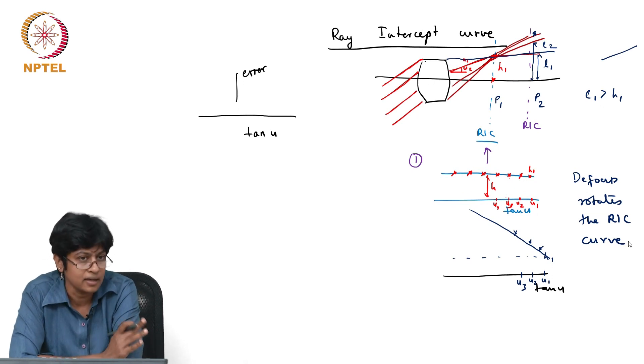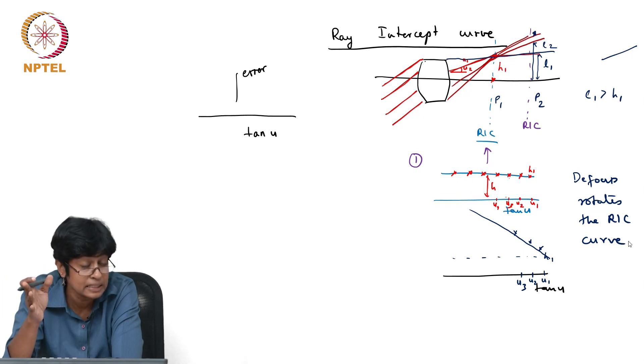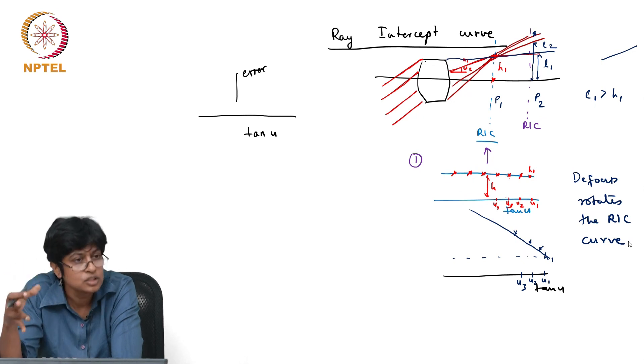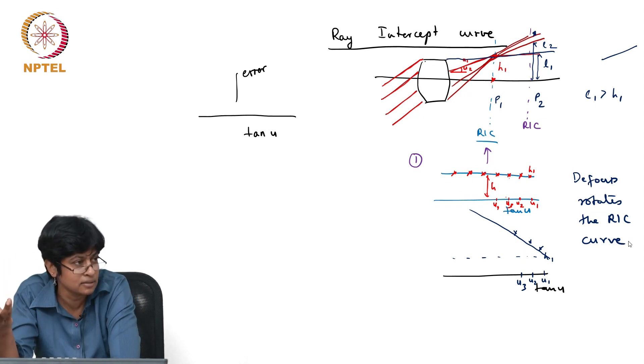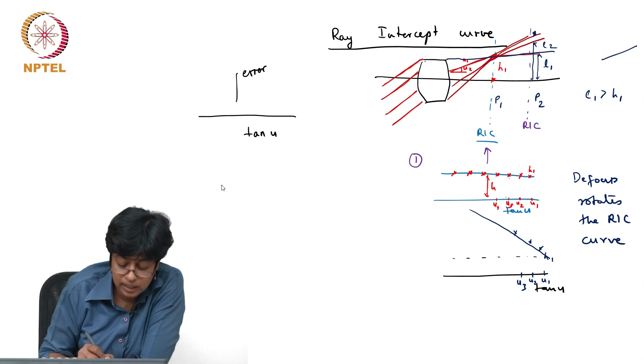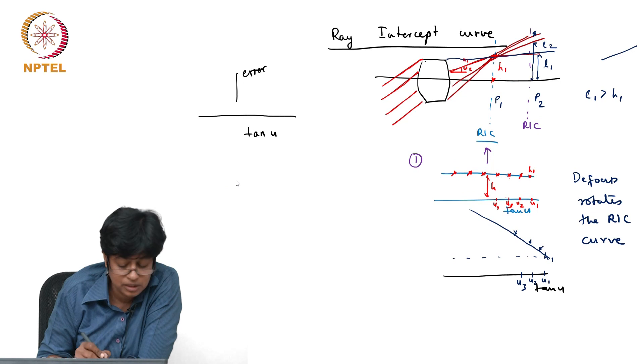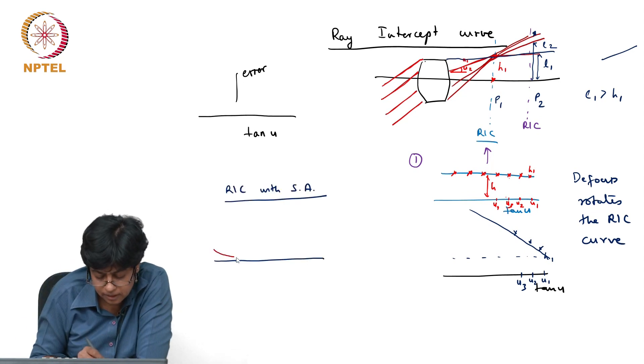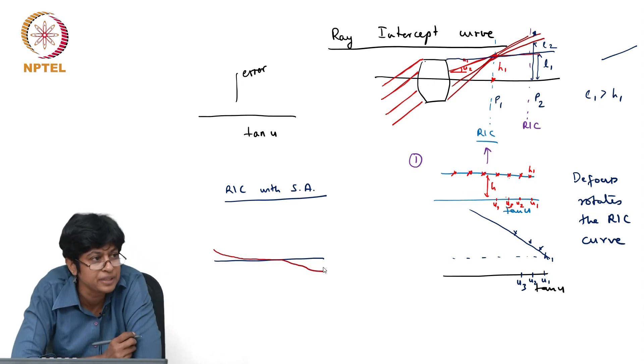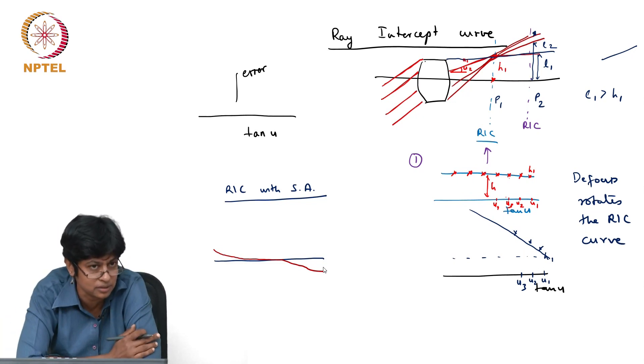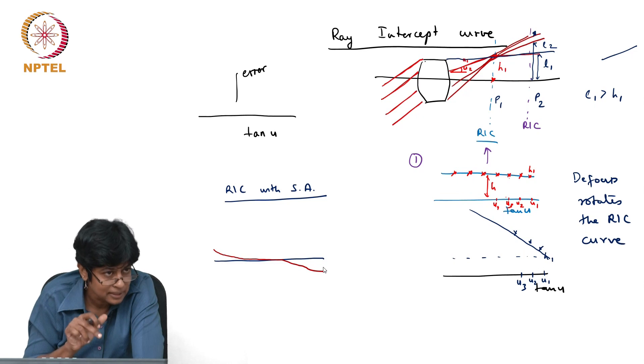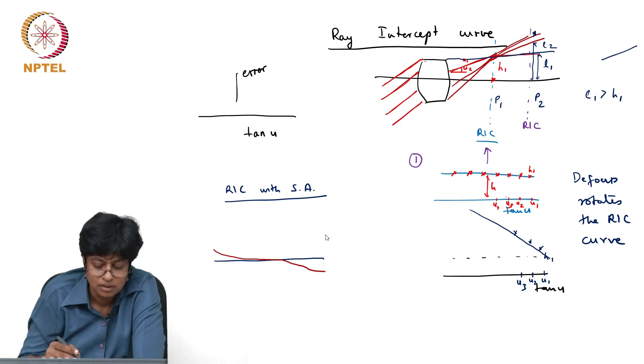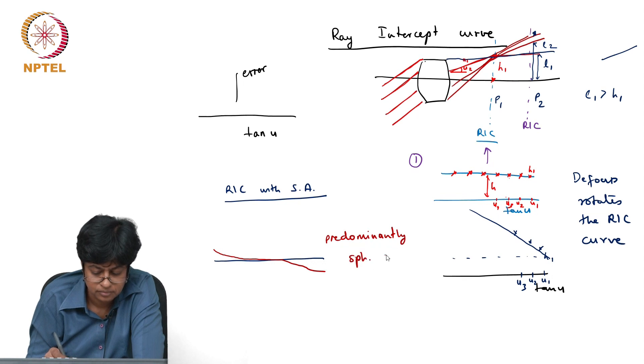If you understand the RIC curves really well, if you are given a set of RIC curves for an optical system, you don't know anything about the optical system, but you are given these curves, you will be able to look at this and get a sense of what this system is doing, where you are looking at the system, has there been some correction in the system. For example, what did our RIC curve look like for a system with predominantly a spherical aberration present? It was something like this, right. I'm not drawn it very well, but something with anti-symmetry to it, right. If you had a system like this, you would say there is predominantly spherical aberration present.